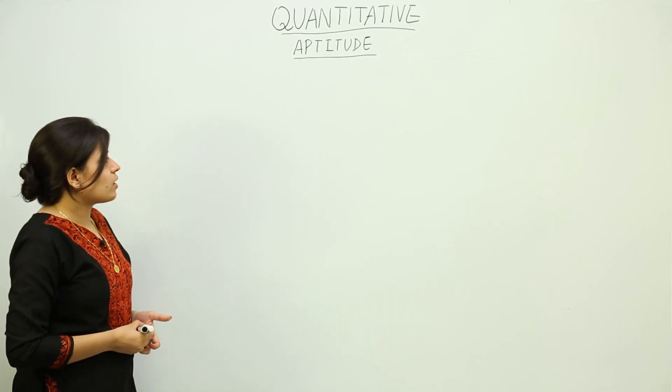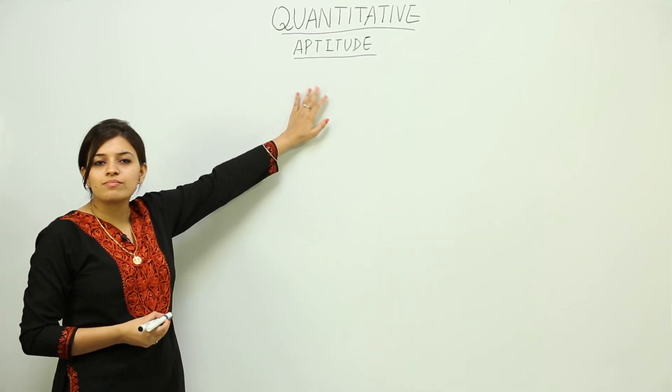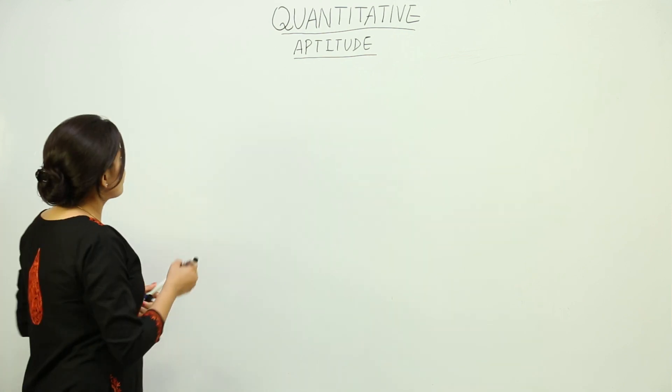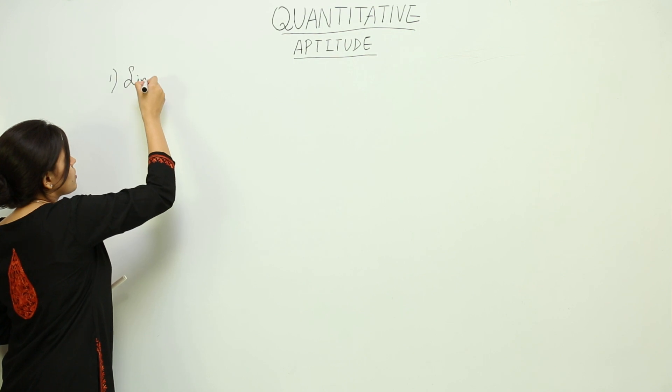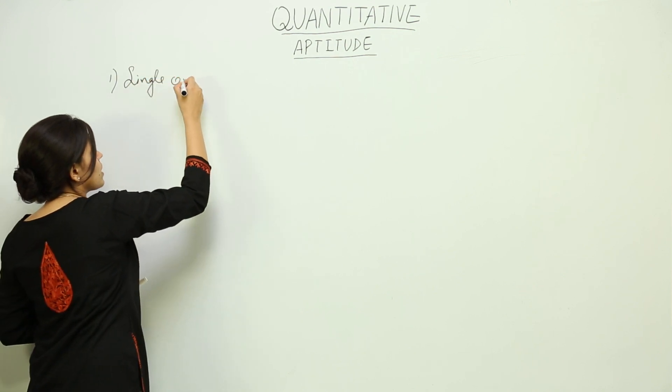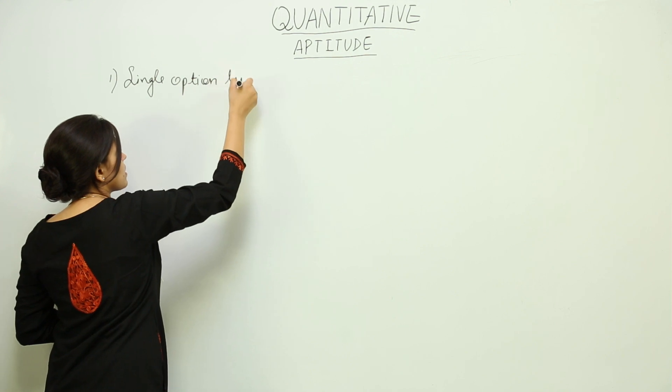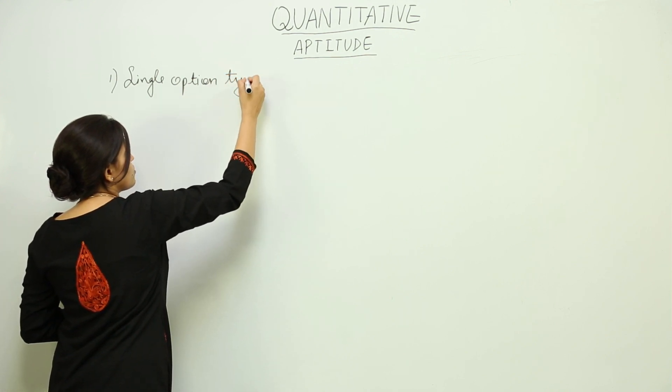Let's see the types of questions that occur in the GRE quantitative aptitude. The first type of questions you will see are known as single option correct. This is the most familiar type, single option type.